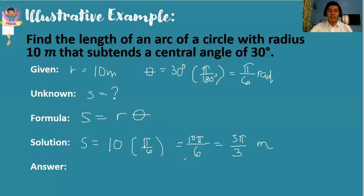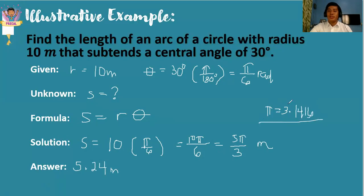This is the unit of measure. So if you want to write the final answer, that will be 5.24 meters. How did we get 5.24? Simply substitute pi by 3.1416. This is what you're also going to use in your modified assessment. Again, to answer your modified assessment, follow the GUPSA format.